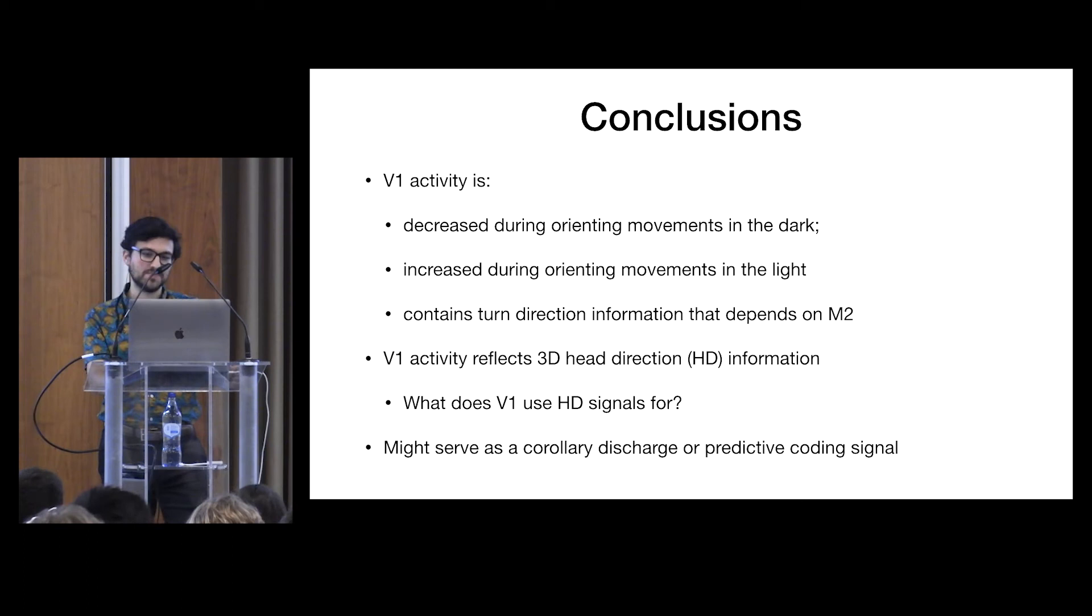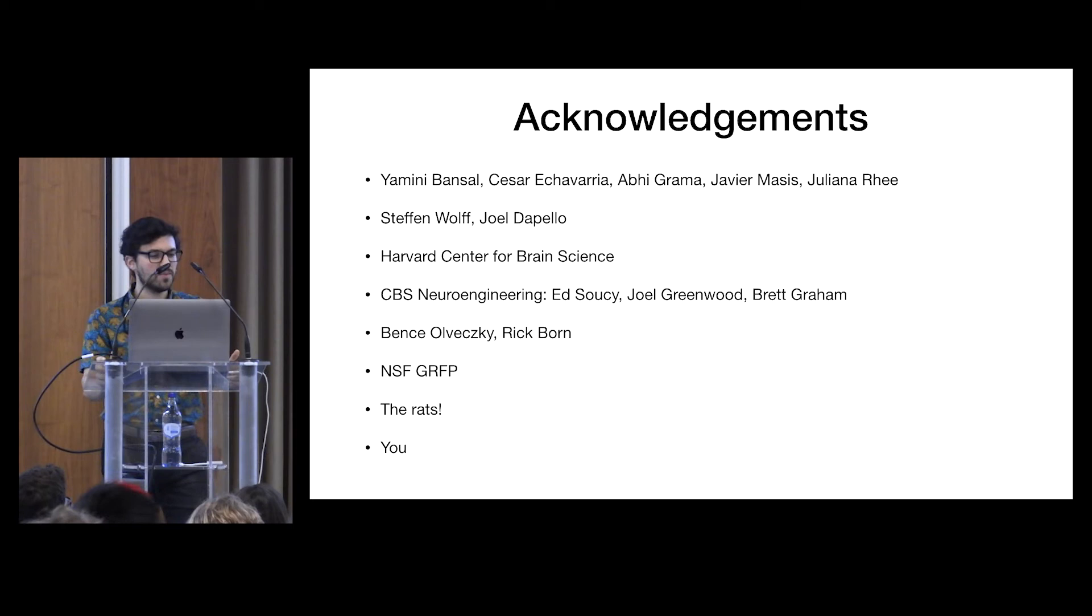So with that, I want to thank my lab, especially Javier Macis and Stefan Wolf, who helped with some of the histology and viral tracing that I didn't have time to tell you about. Joel DiPillo, who helped us with some initial modeling. We initially used a very deep convolutional neural network to do this head direction decoding, but found that linear regression works just as well, which is kind of interesting. Harvard Center for Brain Science, the Neuroengineering Core, which is super helpful for getting things to work. Ben Sabatini and Rick Bourne, who are on my committee, the GRFP for funding the rats. It's a huge privilege to be able to do invasive experiments in animals, so it's not to be taken for granted. And thank you for listening.